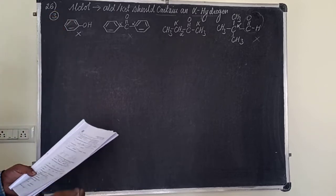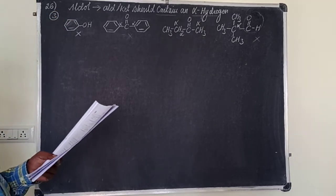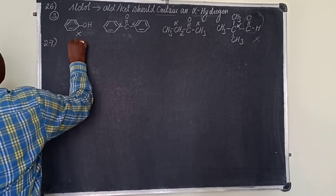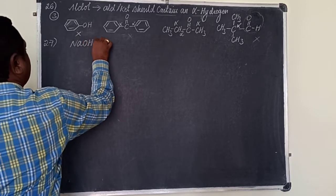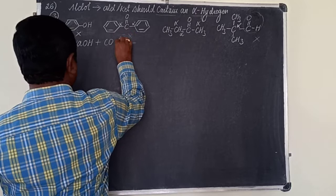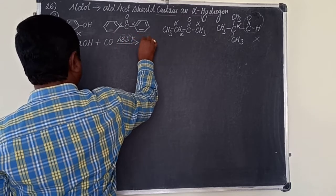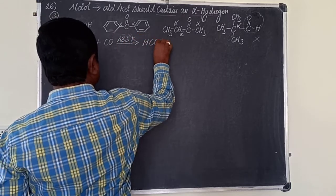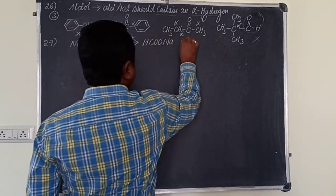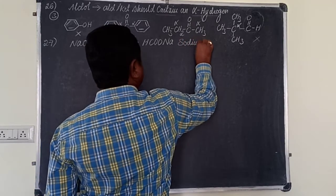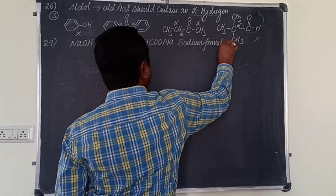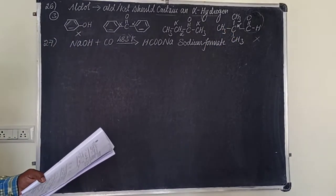Question 27. On heating the mixture of sodium hydroxide and carbon monoxide at 483 Kelvin, it gives sodium salts of carboxylic acid. It gives sodium formate. Yes, sodium formate. Option 3.